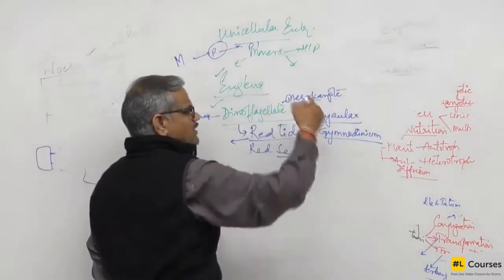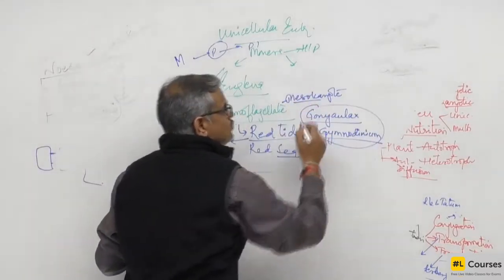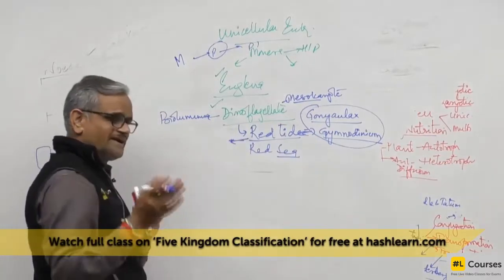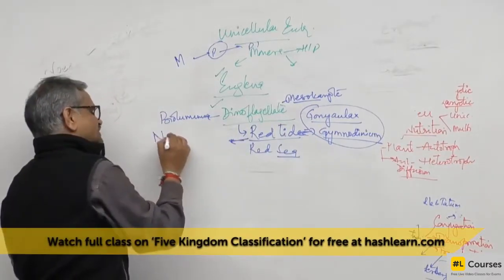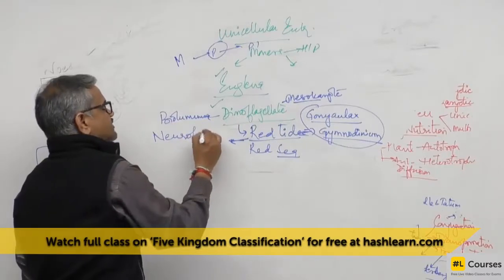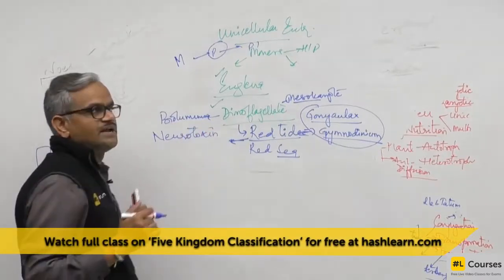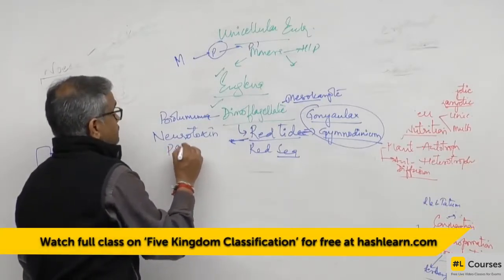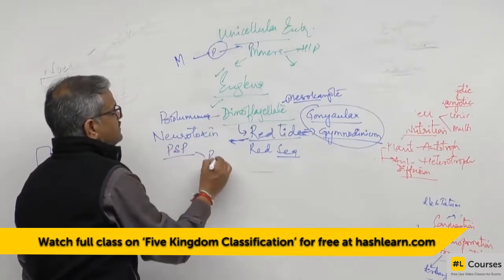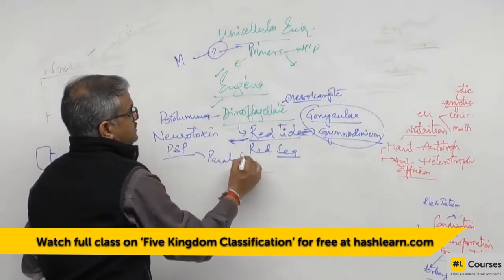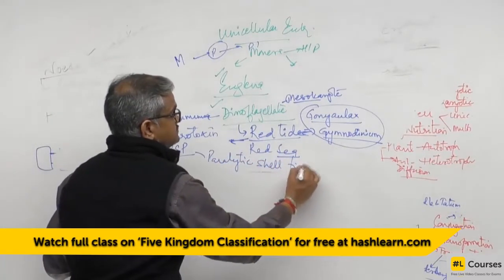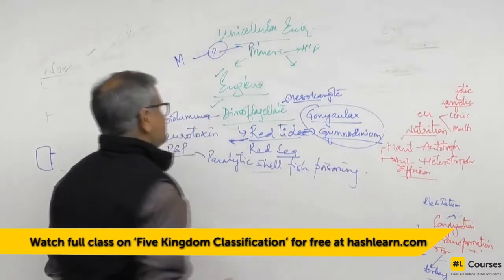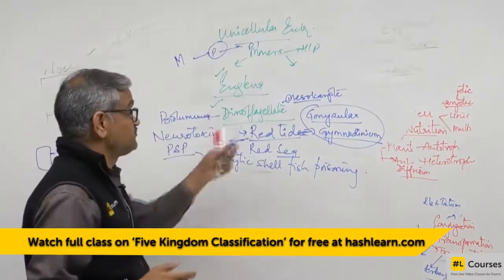Gonyaulax and Gymnodinium release a toxin which hampers the nervous system, called neurotoxins. As a result, it causes PSP — Paralytic Shellfish Poisoning. This is what we refer to as Red Tide.